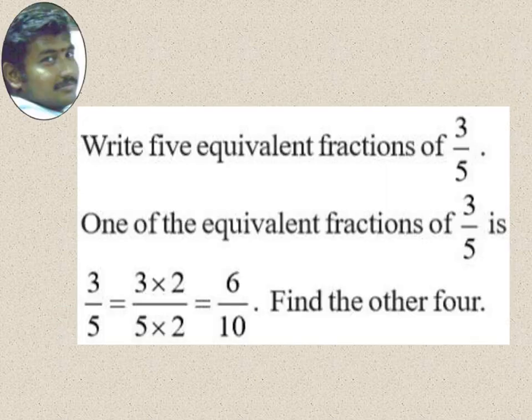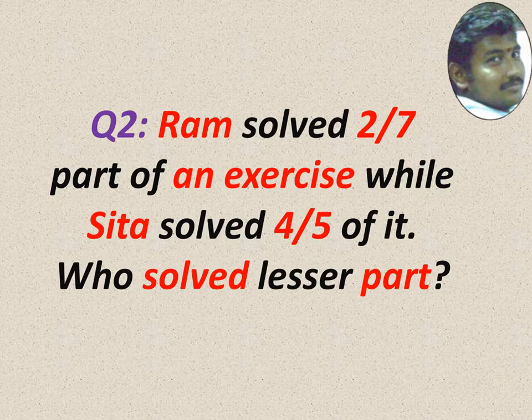Write 5 equivalent fractions of 3 by 5. To get equivalent fractions, just multiply numerator and denominator by the same number. Here one example is given. Numerator and denominator, 2 is multiplied. 3 into 2 is 6, 5 into 2 is 10. So 6 by 10 is equal to 3 by 5.